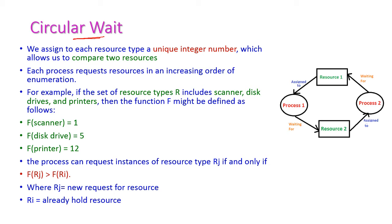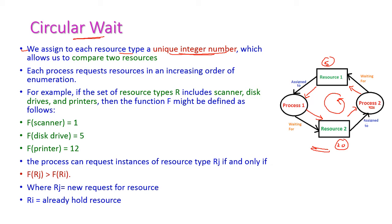Circular wait — the last and final condition. In this example, process 1 is already holding resource 1 and waiting for resource 2, while process 2 is holding resource 2 but waiting for resource 1. A circle is created here, hence this is called circular wait. To overcome this, we assign each resource type a unique integer number — for R1 we assign some number, for R2 another number. Unique integer numbers are assigned to all resources so that we can easily compare two resources.